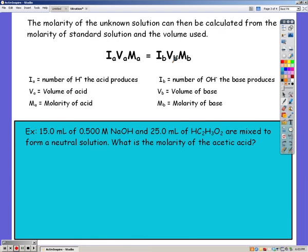This is basically the dilution equation. You have Ia Ma Va equals Ib Vb Mb.